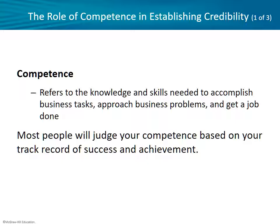First up is competence. The case studies in the book talk about three different candidates and how they vary in each of these components. Competence is basically: can you get the job done? Do you have the right knowledge and skills? Can you convince somebody that you're the right person for this work? They say this is based mostly on a track record of success and achievement. On a resume, one of the key things is your experience — not just what you had to do, but what can you show? Is there anything that points towards being successful, some type of achievement? That's going to really help establish your competence.